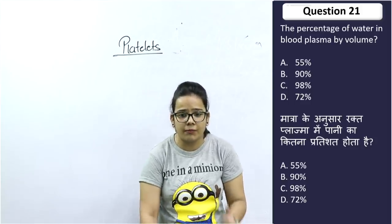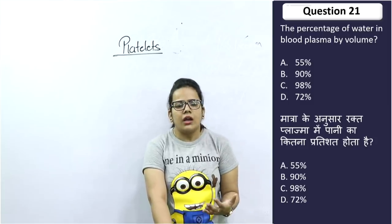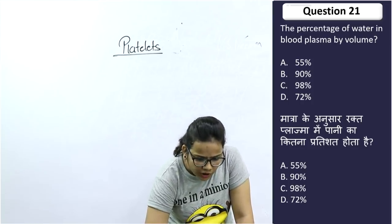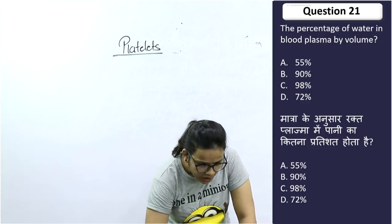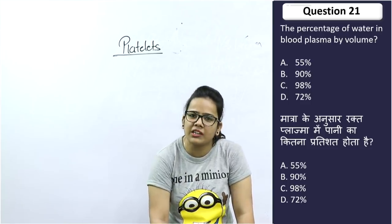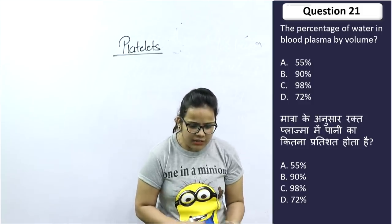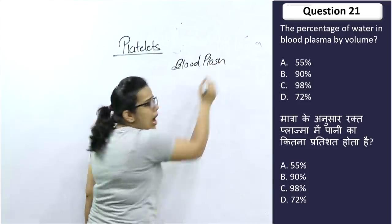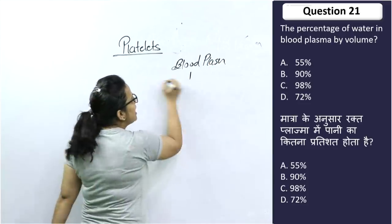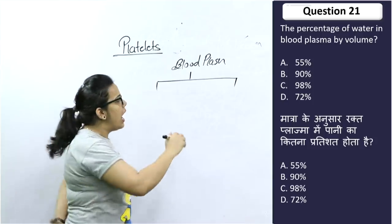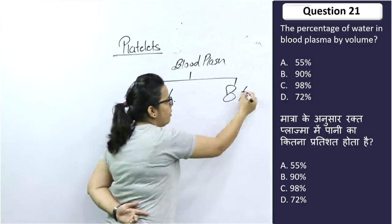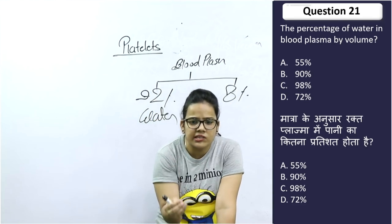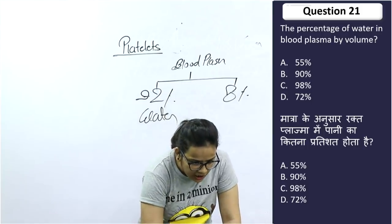Next question: The percentage of water in blood plasma. How much percentage of water is in blood plasma? The right answer here is 90%, though it can also be cited as 92% water with 8% carbohydrates, protein, fat, etc. So 90 is the right answer for this question's options.